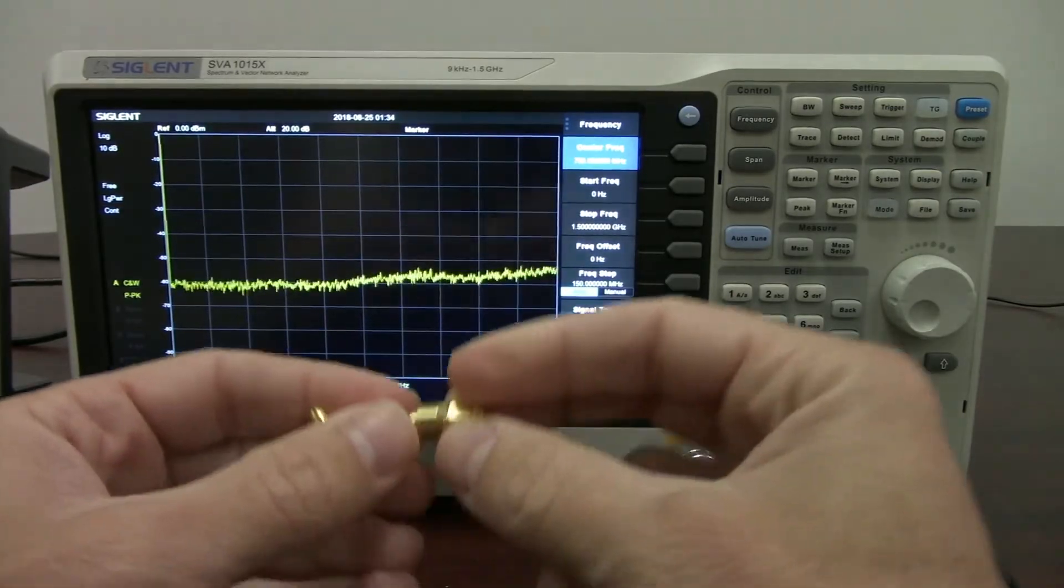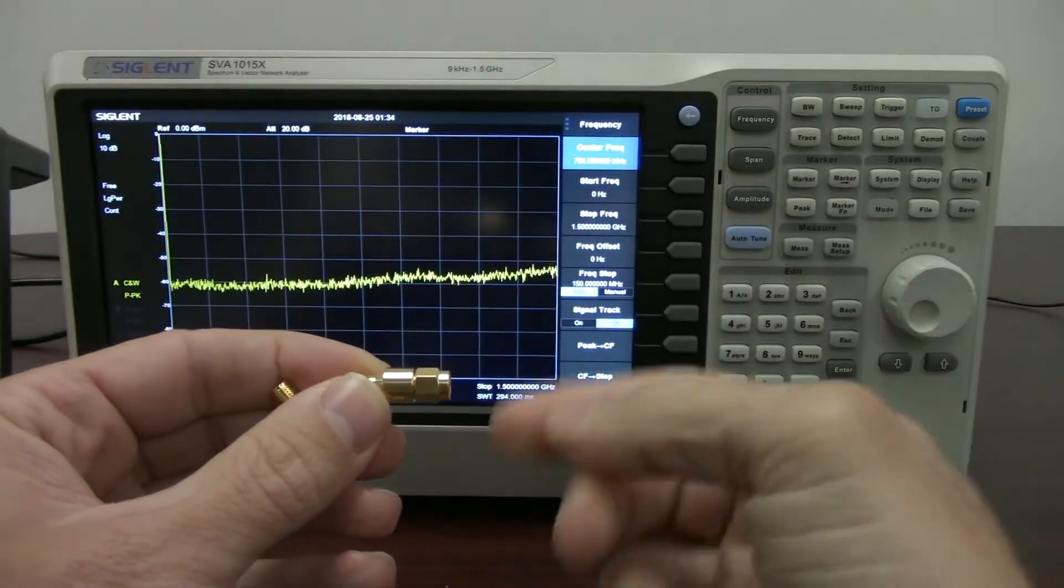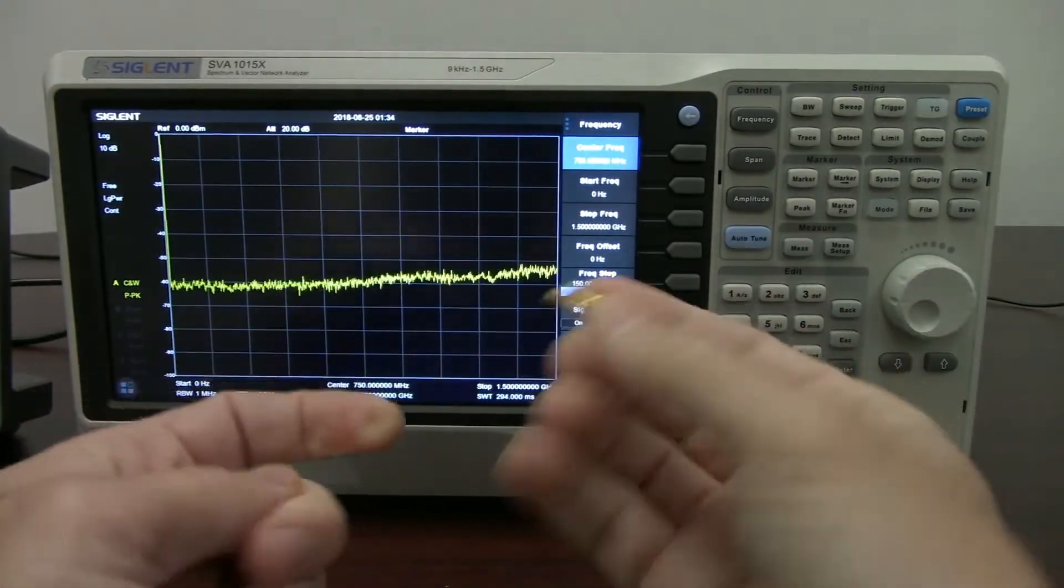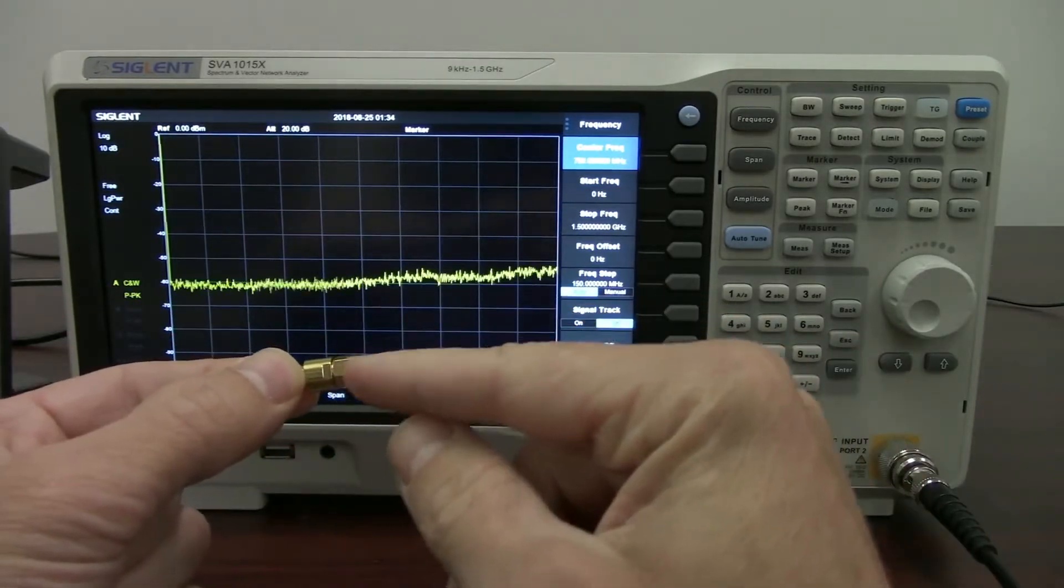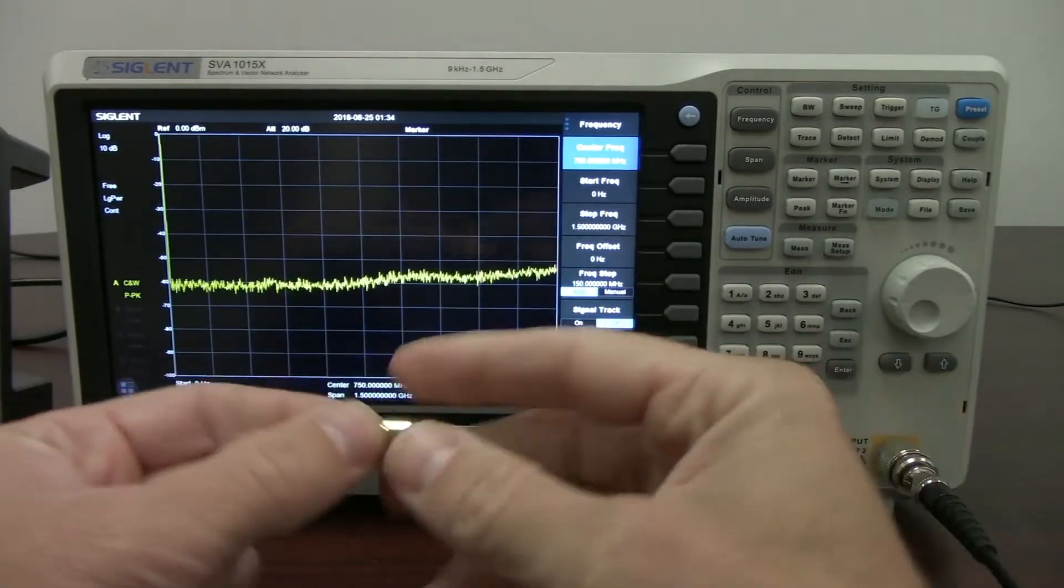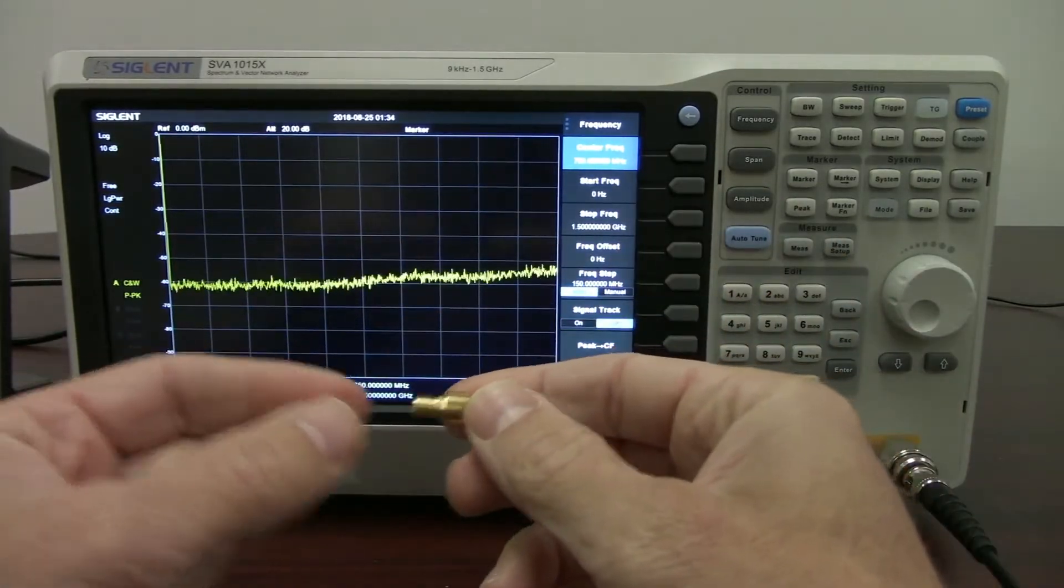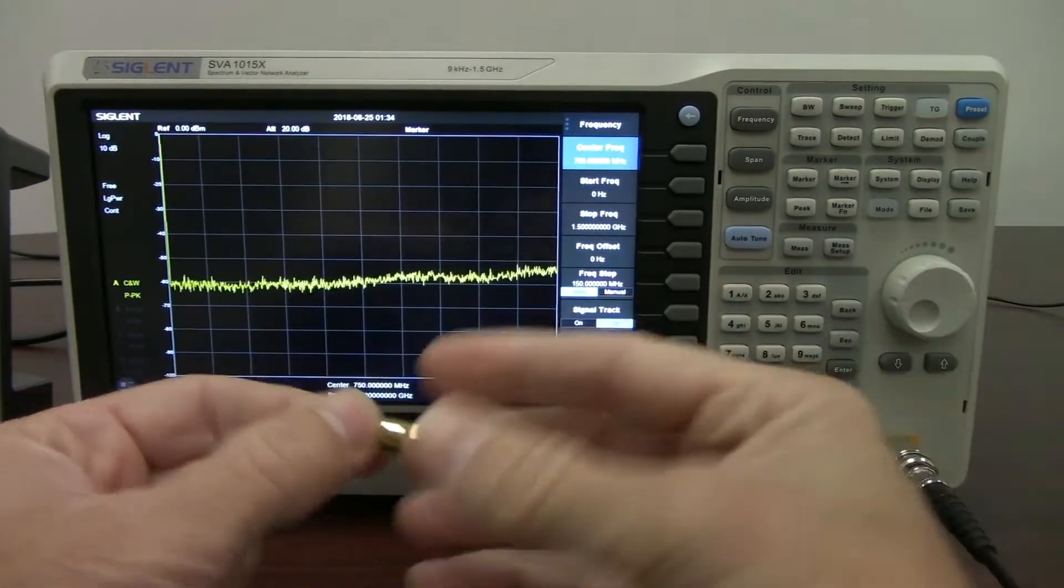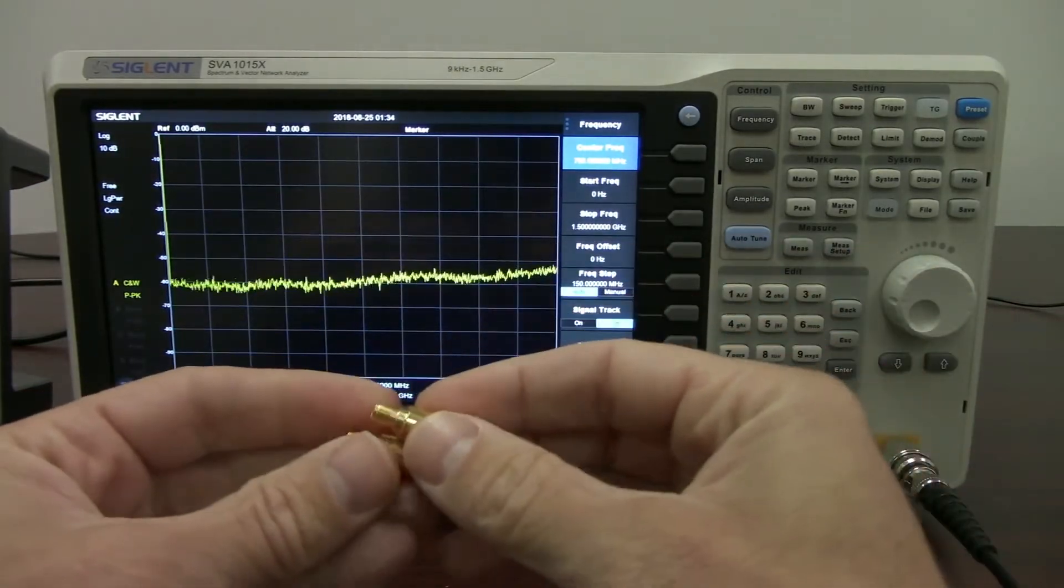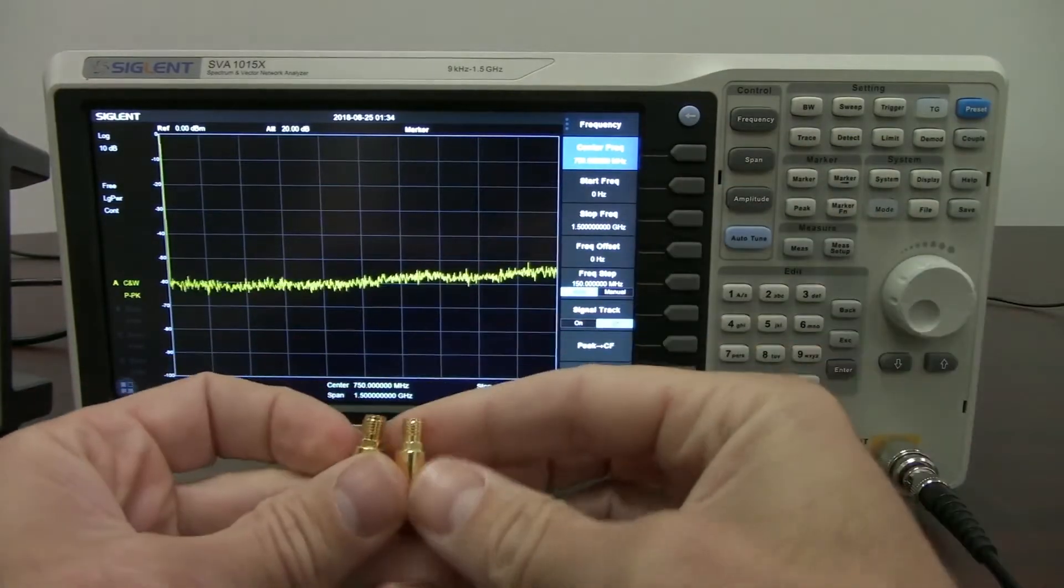For those of you that may not be aware, an attenuator is an element that will decrease the signal coming out. So if we have 0 dBm coming in, we're going to have minus 10 dB coming out if it's a 10 dB attenuator, or if it's 0 dB in and we've got a 20 dB attenuator, we'll get minus 20 dB out. So it helps to knock the signal down or decrease the amplitude of the signal going into the next element of the circuit.